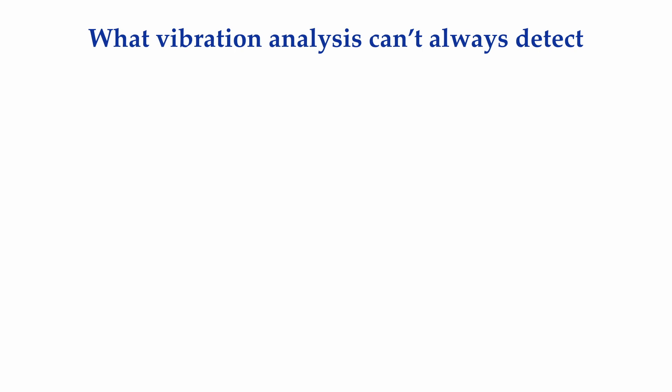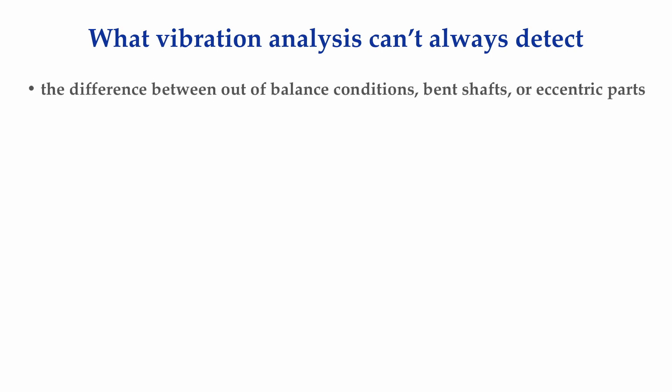Vibration analysis is a very powerful diagnostic tool, but some people expect too much from the technology. Here is a list of problems that vibration analysis has a difficult or impossible time detecting. It is very difficult to tell the difference between unbalance, bent shafts, or excessive run-out. All of these conditions will exhibit what appears to be an out-of-balance condition, and in fact, permanently bent shafts and excessive run-out are out-of-balance conditions. But how you go about correcting these problems would be different depending on what the issue is.